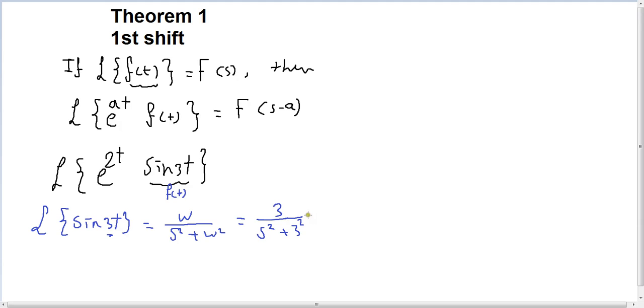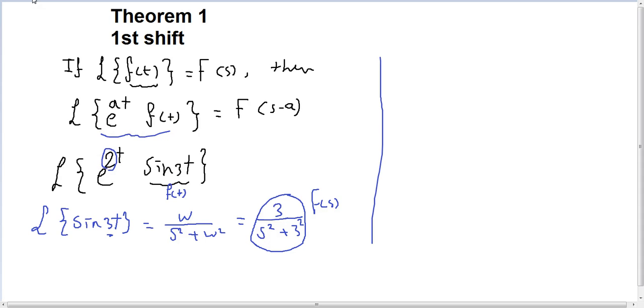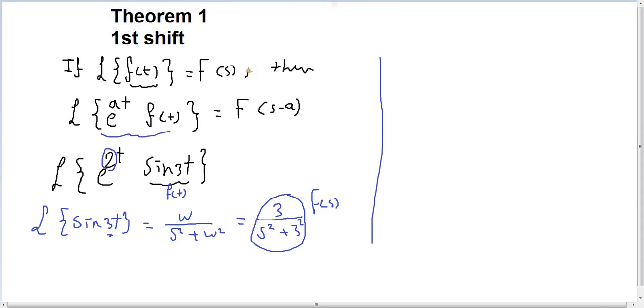Now we get the Laplace. Now we know F of S, so this is F of S. We know F of S, then if we know F of S, apply the theorem. So shift each S by 2. Shift each S by 2, so we're going to have Laplace of e to the power of 2T.